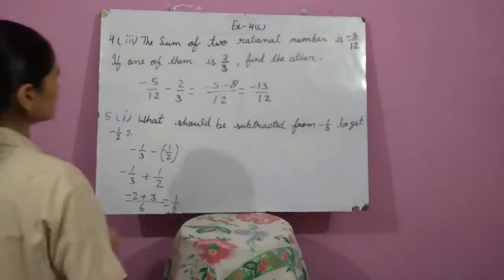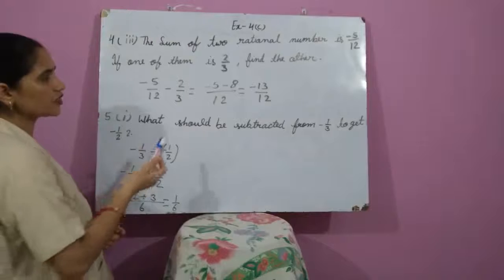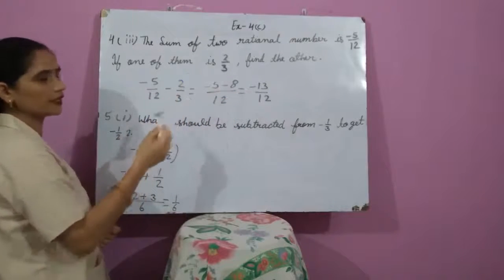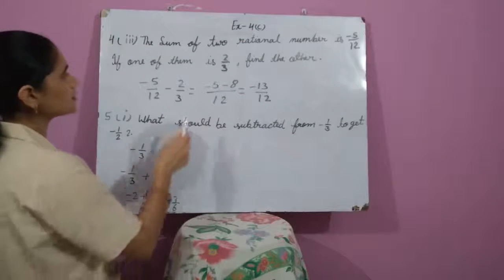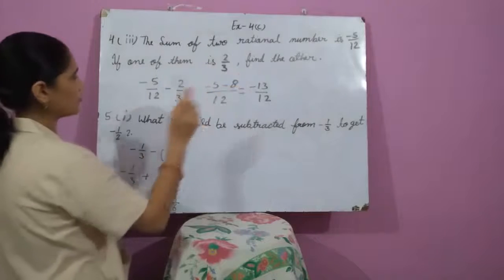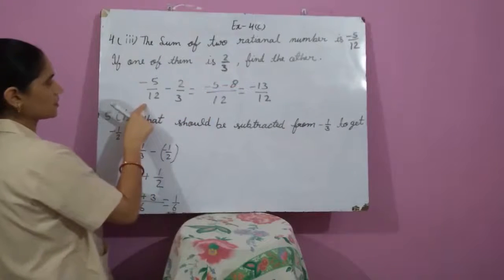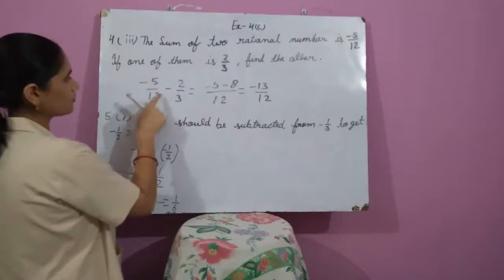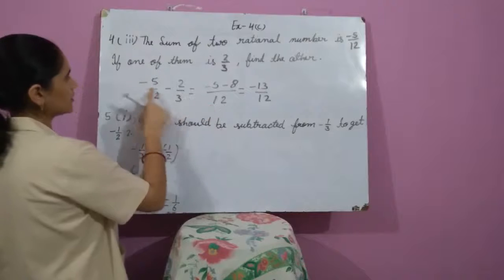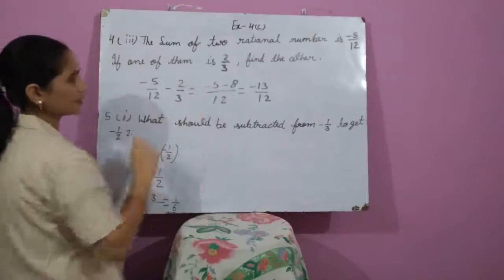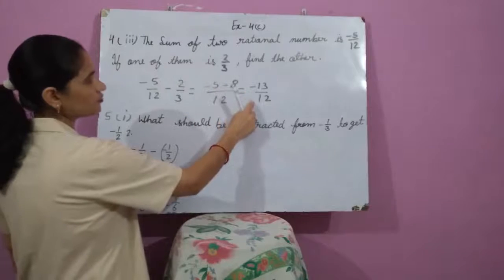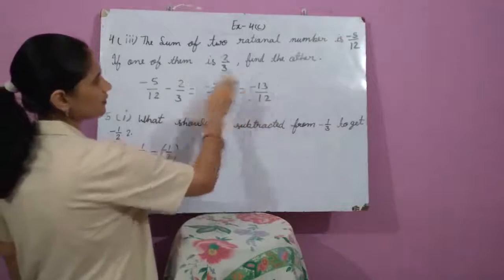Question number 4, third part: The sum of two rational numbers is minus 5 upon 12. If one of them is 2 upon 3, find the other. We subtract 2 upon 3 from minus 5 upon 12. The LCM is 12. After the calculation we get minus 5 minus 8, which gives minus 13 upon 12. This is the required other number.